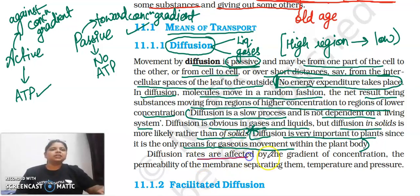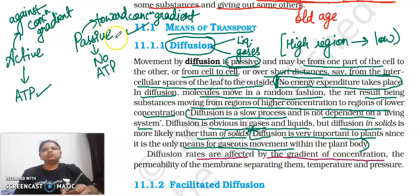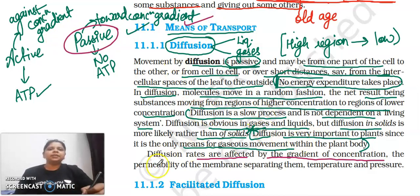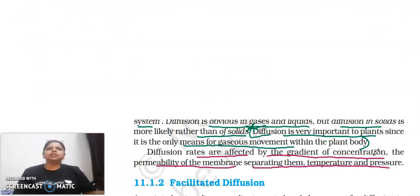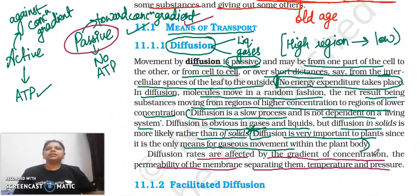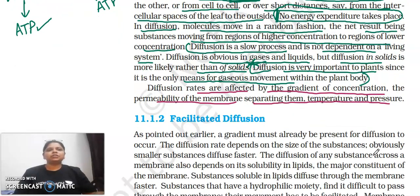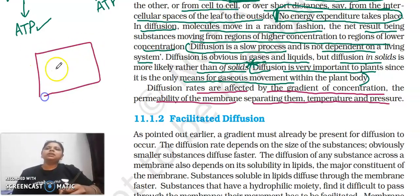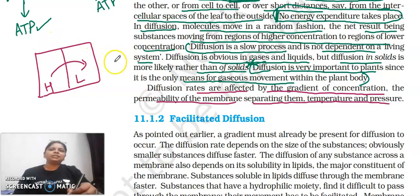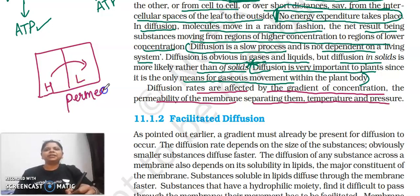Diffusion rates are affected by: the gradient of concentration — since it is a passive process it moves towards the concentration gradient; the permeability of the membrane separating them; temperature; and pressure. In diffusion, molecule transfer from higher to lower concentration occurs through a fully permeable membrane — unlike osmosis which involves a semi-permeable membrane.